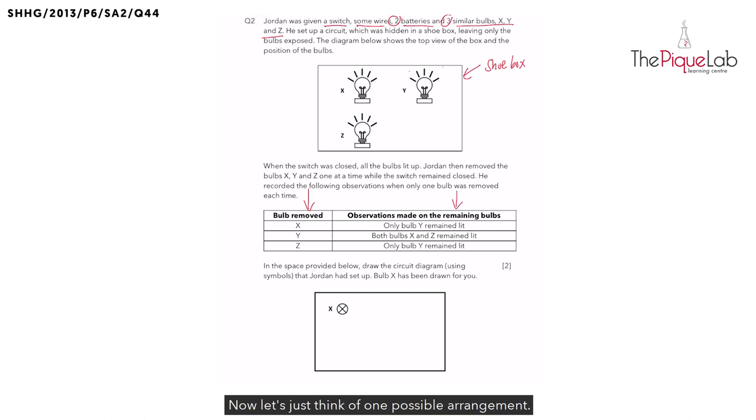Now let's just think of one possible arrangement if all the bulbs are joined in series with the two batteries like this. Now these bulbs are all on the same electrical pathway. If I were to remove one bulb from the circuit like this, will any remaining bulbs light up? No, they cannot,